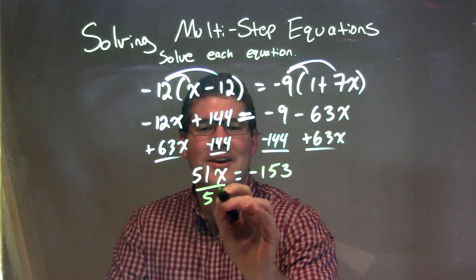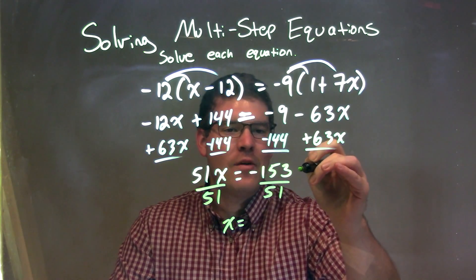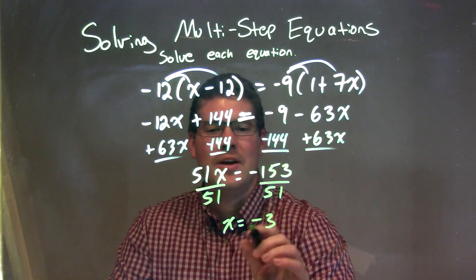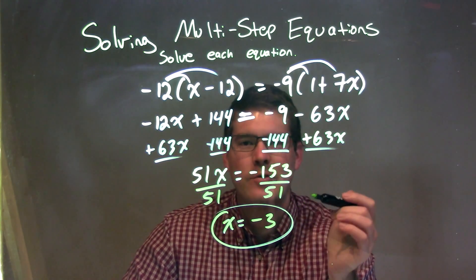I'm going to divide by 51 on both sides here. I'm left with x by itself, and negative 153 divided by 51 is just negative 3, and there we have it. Our final answer here is x equals negative 3.